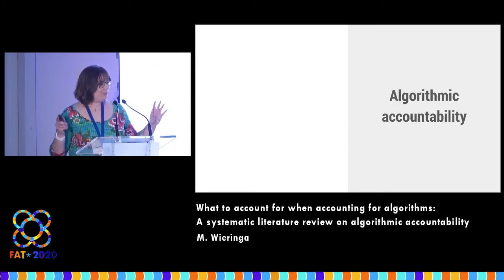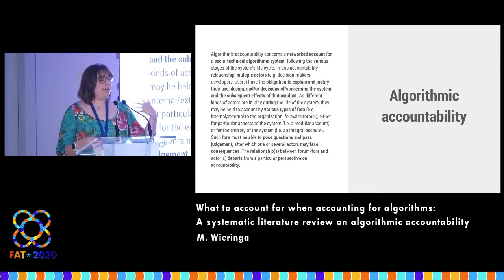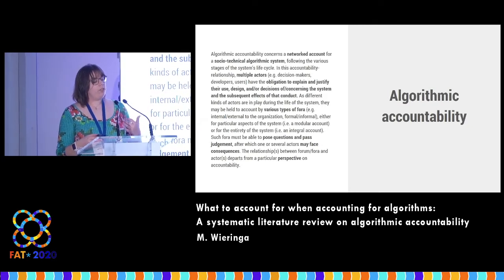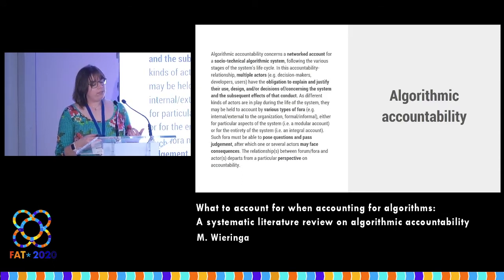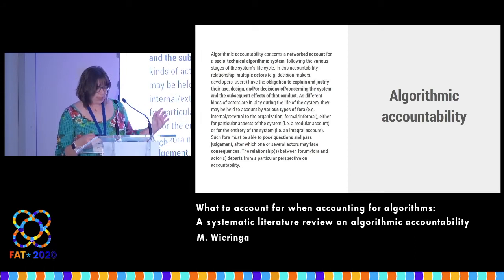I'm going to share a little of the results. The definition of algorithmic accountability I came up with, based on the literature, is that algorithmic accountability concerns a networked account for a socio-technical algorithmic system following the various stages of a system's life cycle. Multiple actors have the obligation to explain and justify their use, design, and/or decisions concerning the system and the subsequent effects of that conduct. As different kinds of actors are in play during the life of the system, they may be held to account by various types of fora — either for particular aspects of the system, or for the entirety of the system. Such fora must be able to pose questions and pass judgment, after which one or several actors may face consequences. The relationship between forum and actor departs from a particular perspective on accountability.